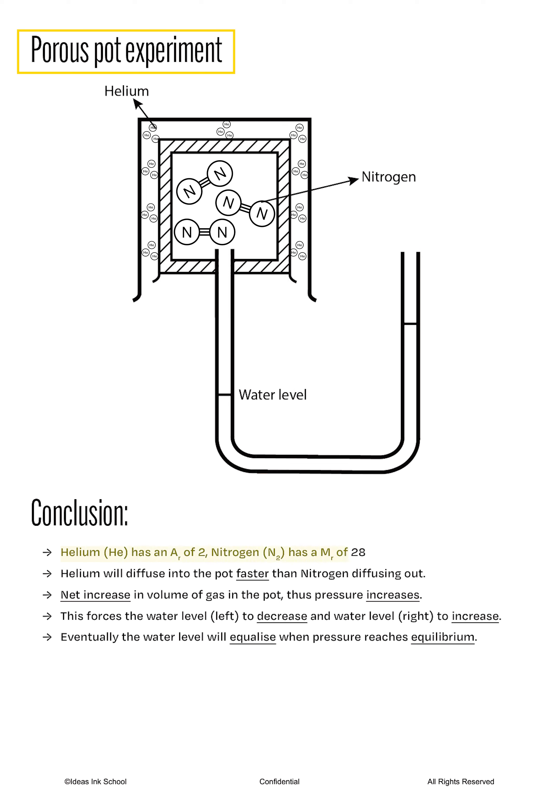Since the rate of diffusion is inversely proportional to the molecular mass of the gas, helium will diffuse into the pot at a much faster rate than the nitrogen gas diffusing out. As a result, there is a net increase in volume of gas in the pot. And this will cause the pressure in the pot to increase. The increased pressure will force the water level on the left side to decrease, while the water level on the right to increase simultaneously.